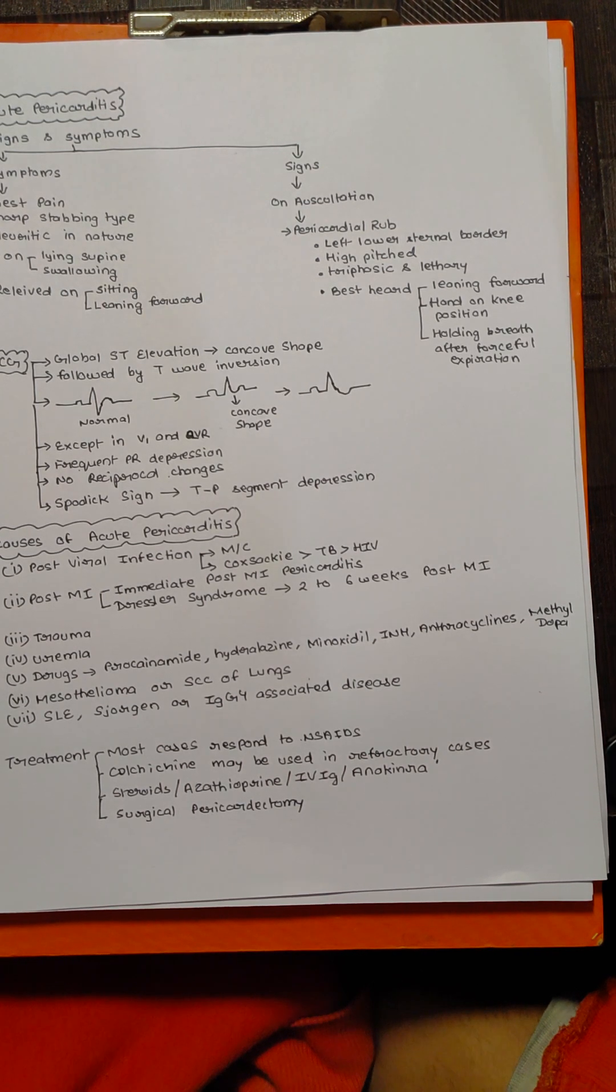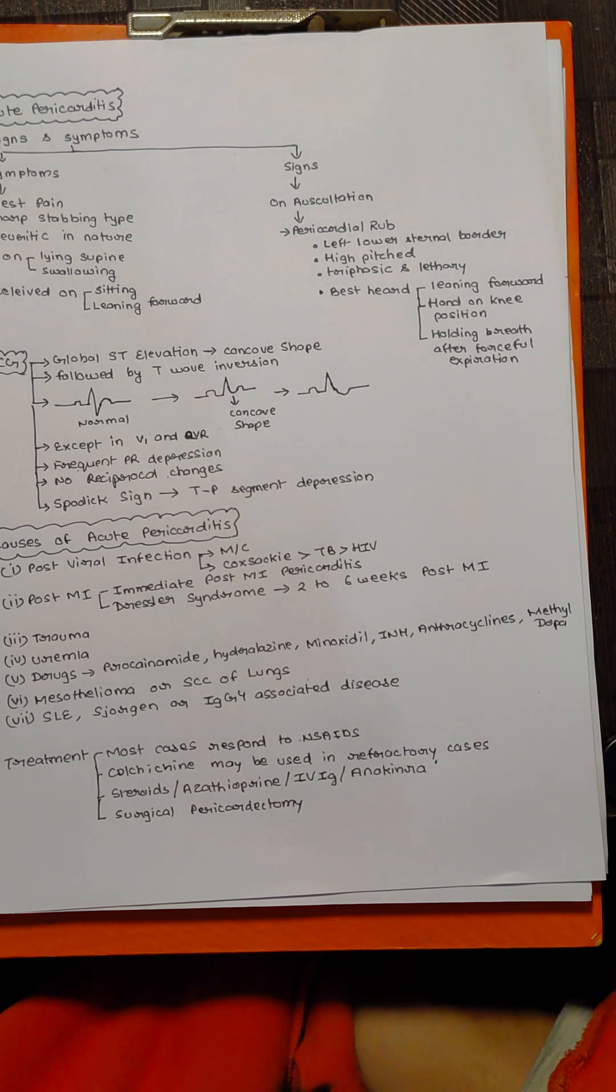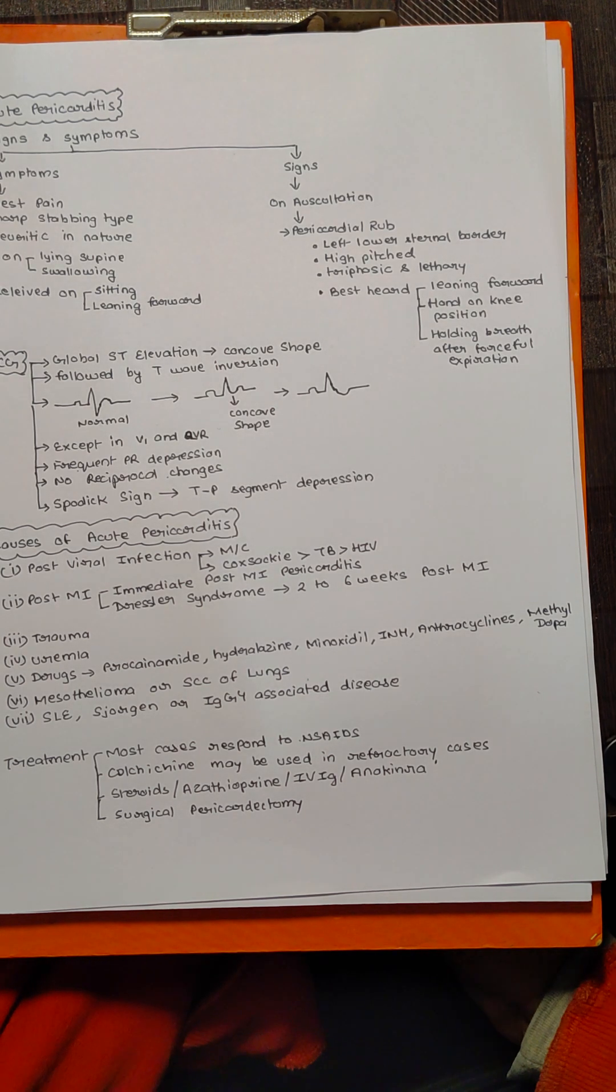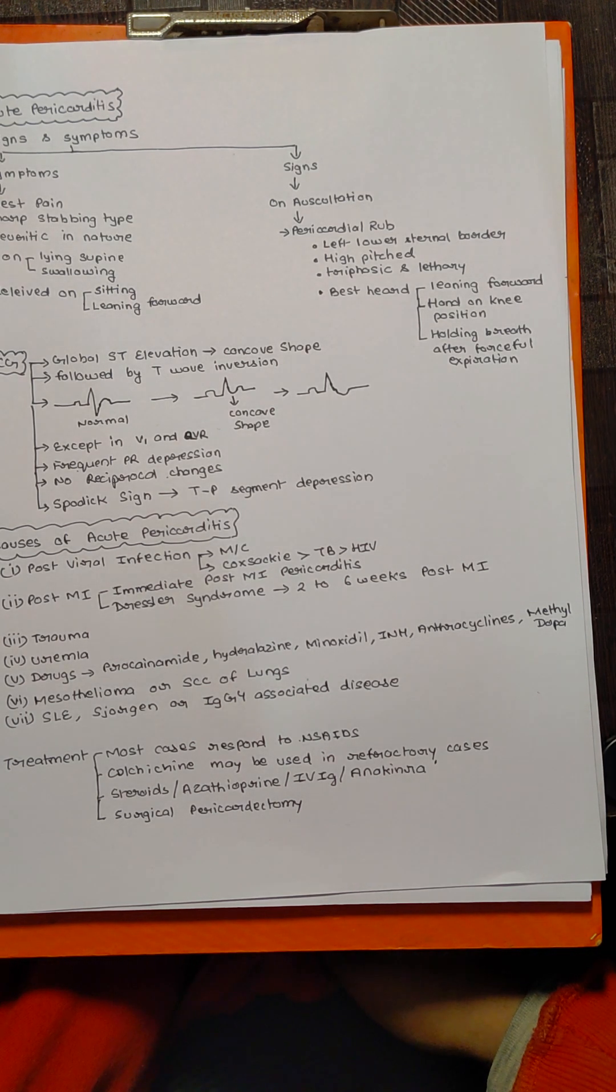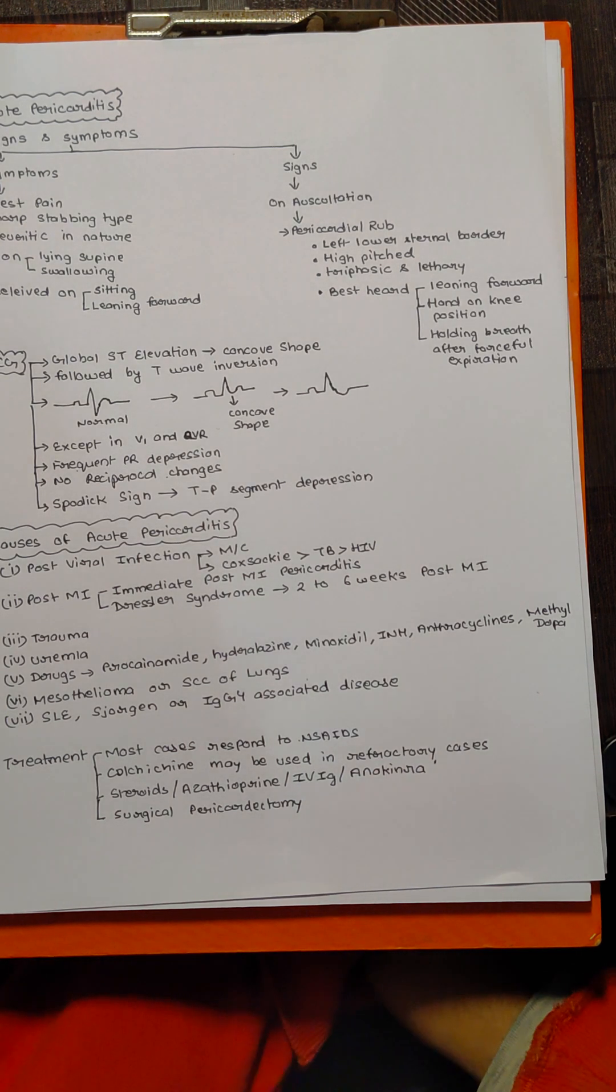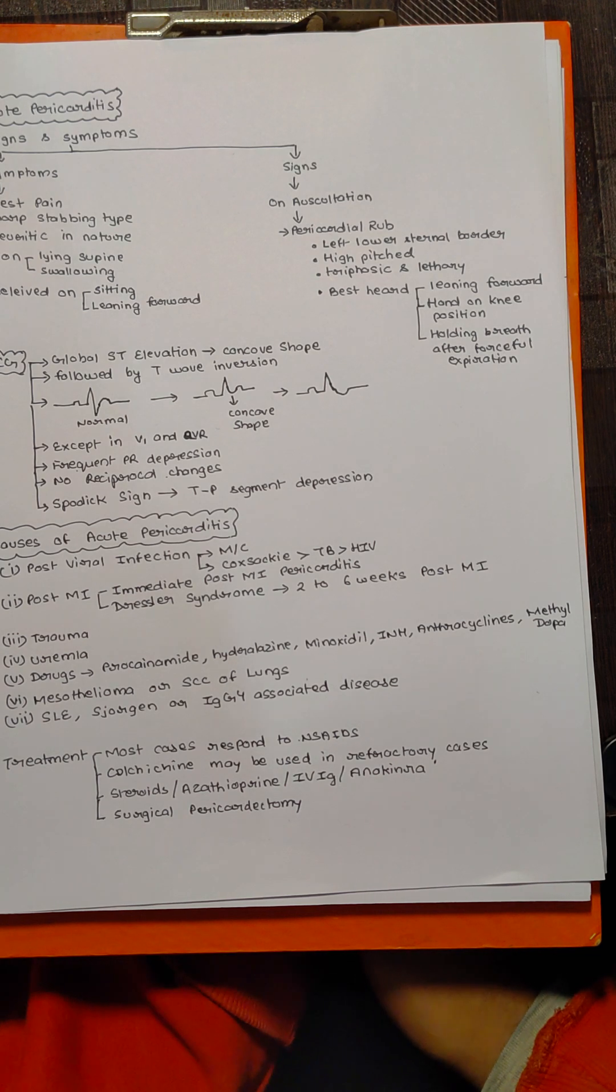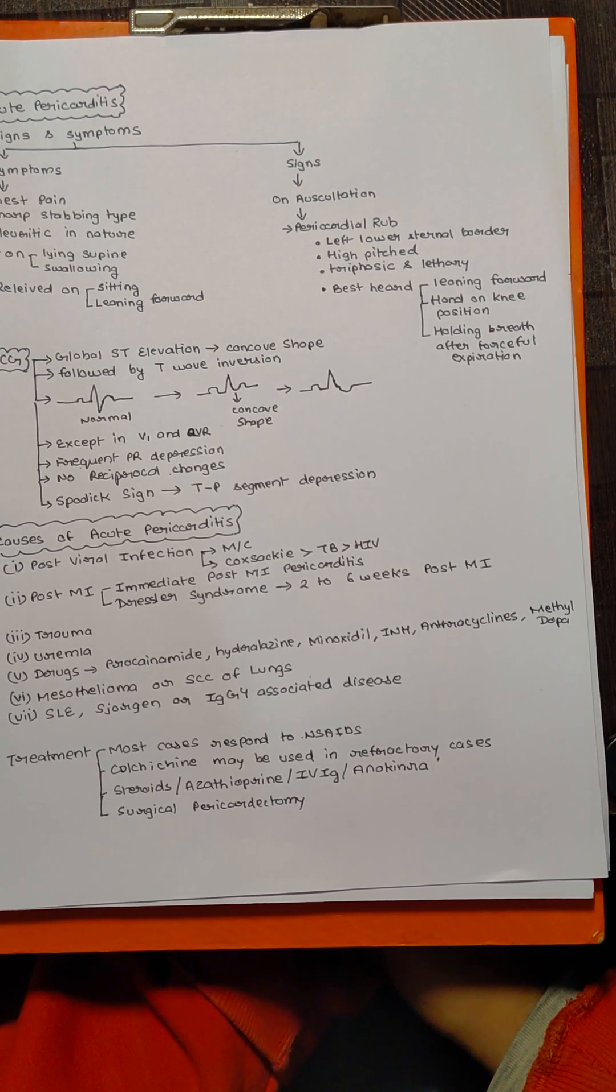Many students wrongly diagnose it as a STEMI, which, if we take a very good history from the patient and we know what exactly acute pericarditis is, is very easy to differentiate from MI. So what exactly is acute pericarditis? Acute pericarditis is basically inflammation of the pericardium.